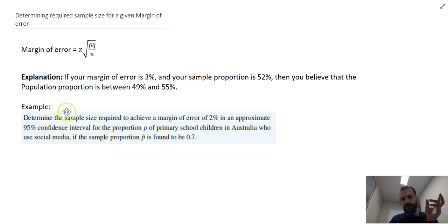So an example question might be something like this: Determine the sample size required to achieve a margin of error of 2% in an approximate 95% confidence interval for the proportion of primary school children in Australia who use social media if the sample proportion P is found to be 0.7.